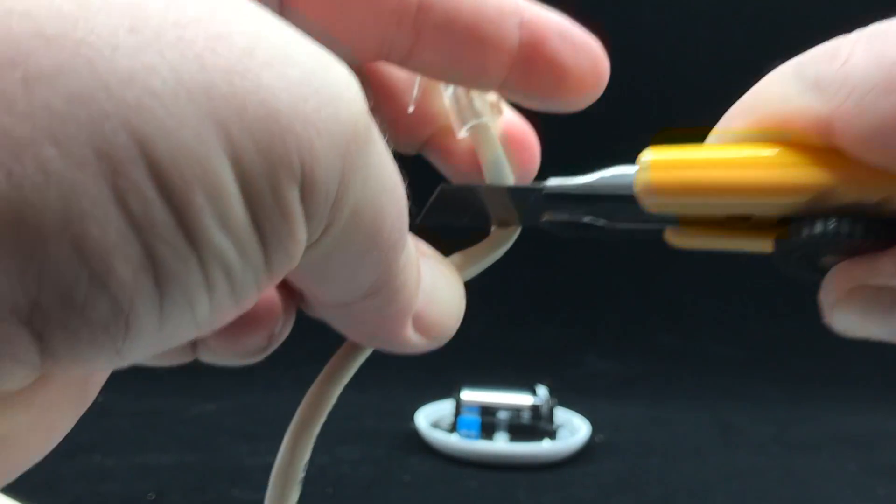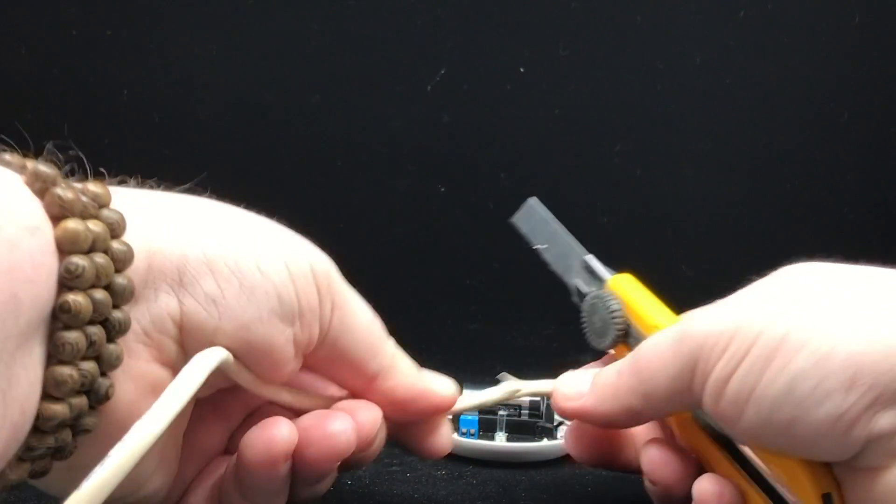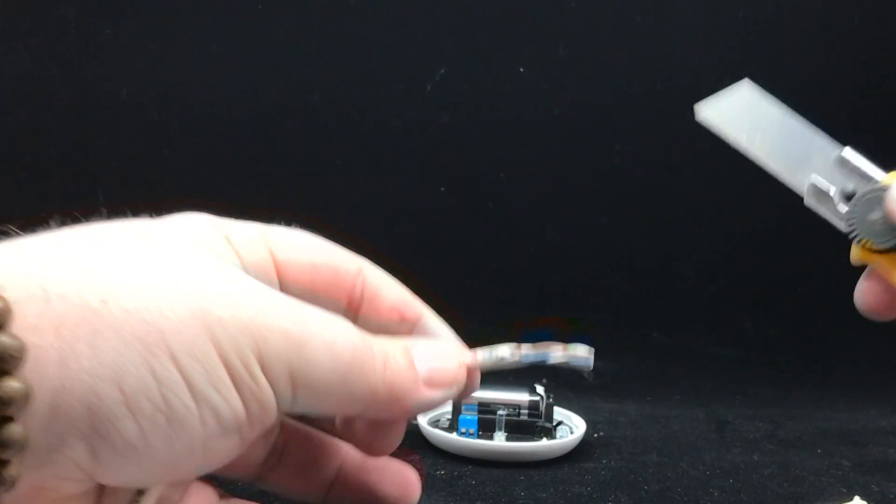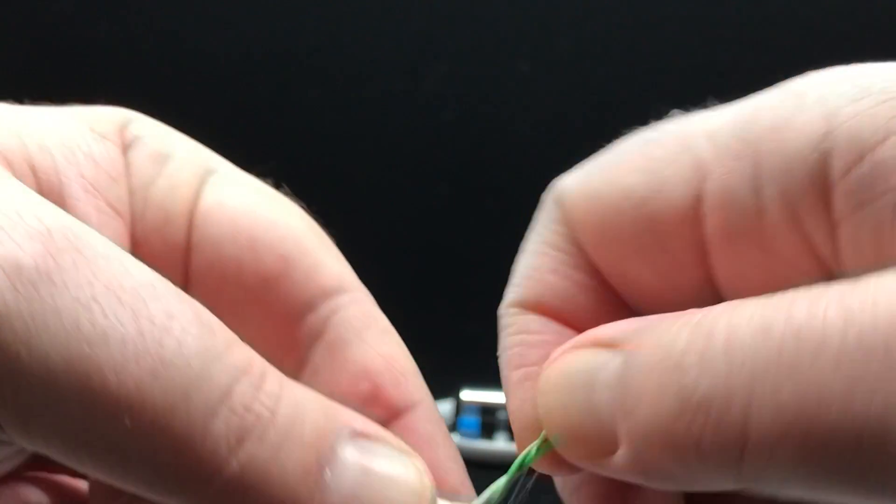So, really simple here. We're going to cut this cable. Then we're going to shave a little bit of the sheath off here. Again, be careful not to cut the wires. You want to make sure that you don't cut the wires. Otherwise this won't work.